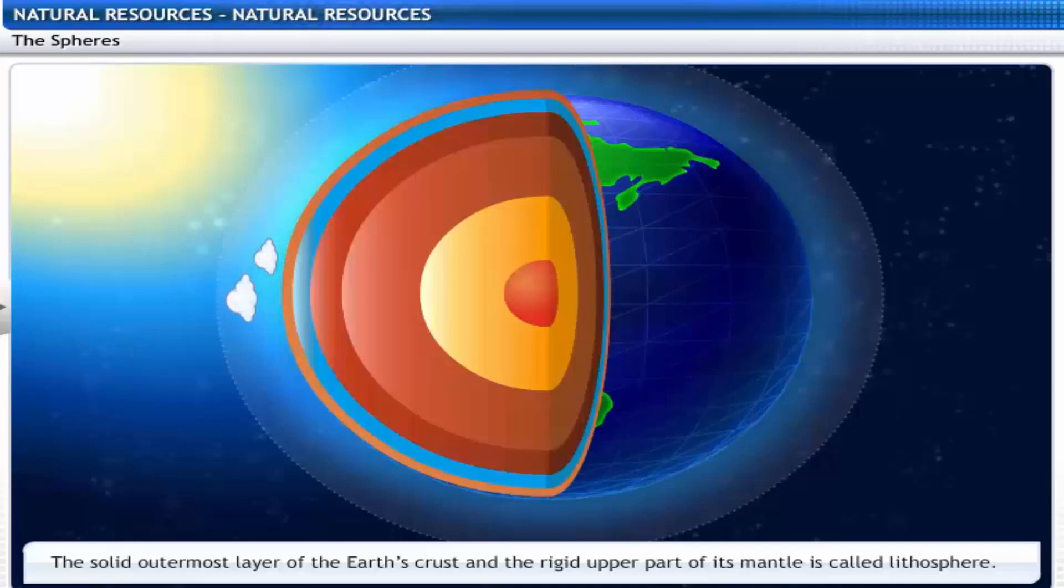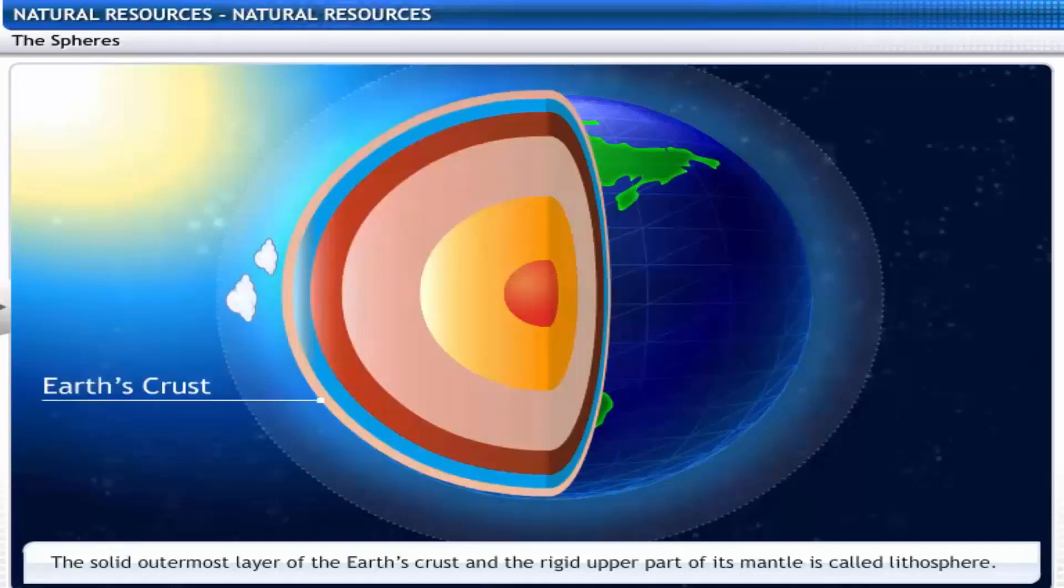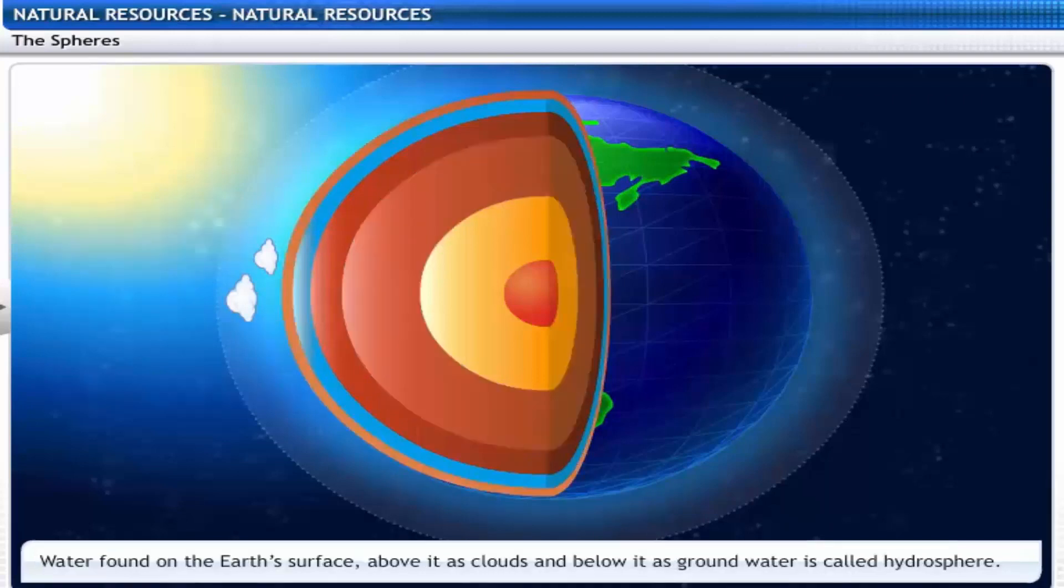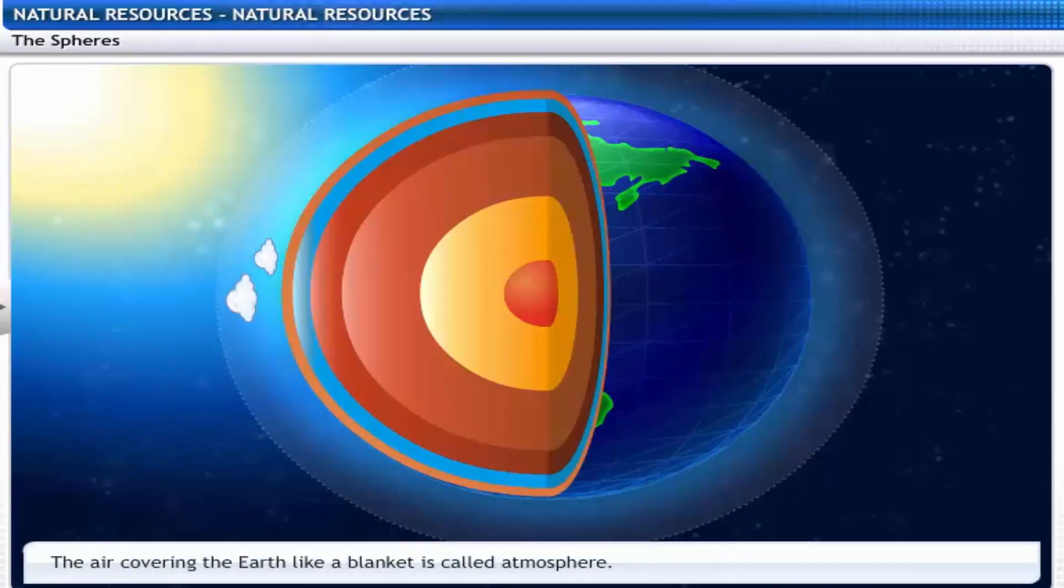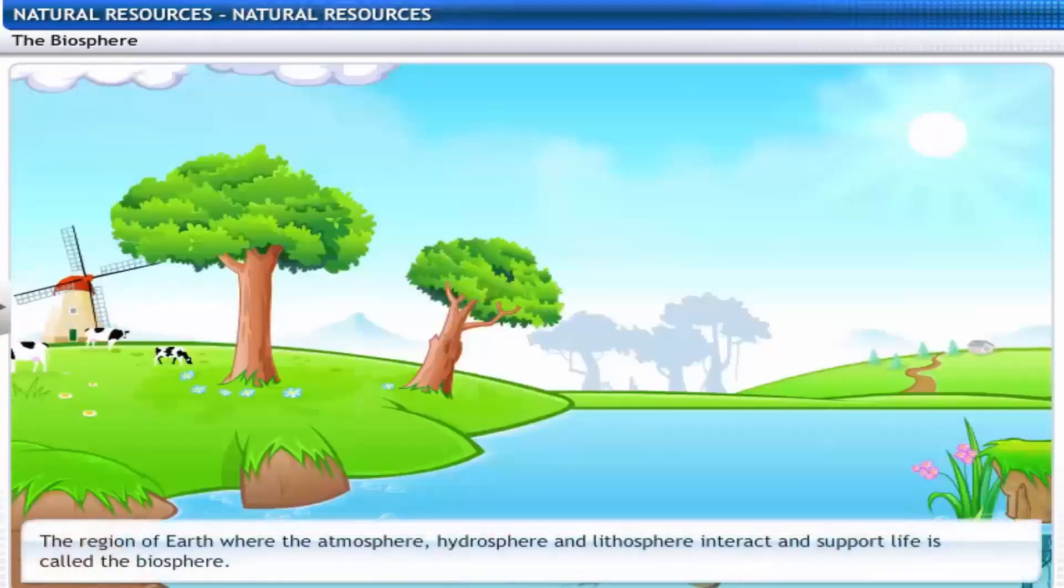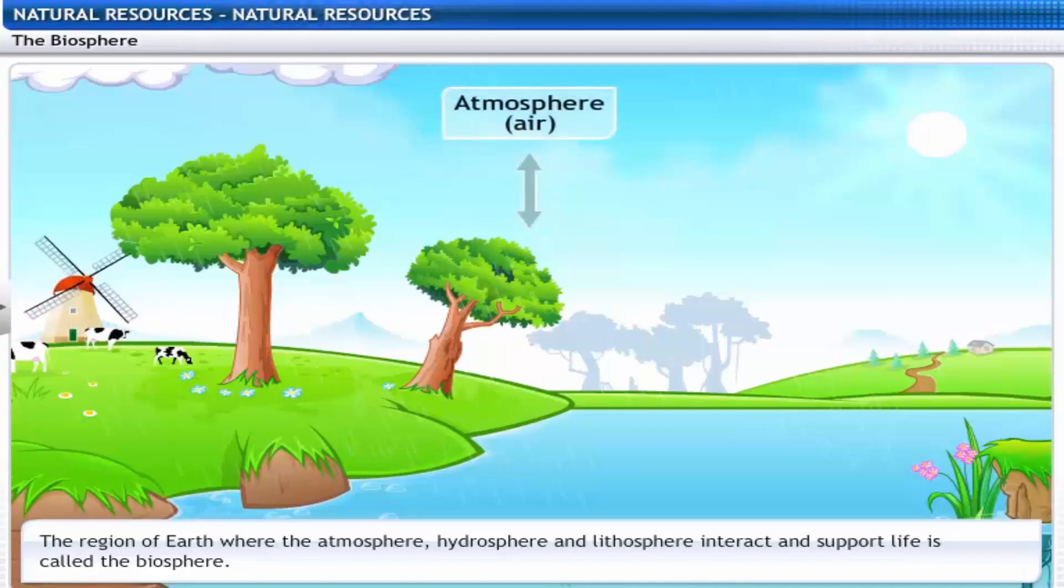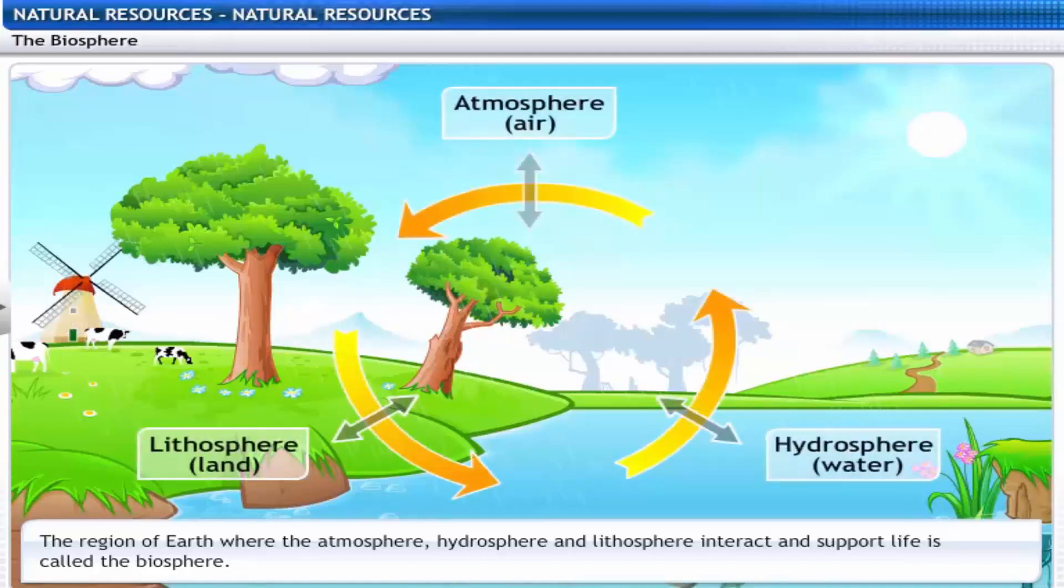The solid outermost layer of the Earth's crust and the rigid upper part of its mantle is called lithosphere. The water that is found on the Earth's surface, above it as clouds and below it as groundwater is called hydrosphere. It constitutes 75% of the Earth's surface. The air that covers Earth like a blanket is called the atmosphere. The region of Earth where the atmosphere, hydrosphere and lithosphere interact and support life is called the biosphere.